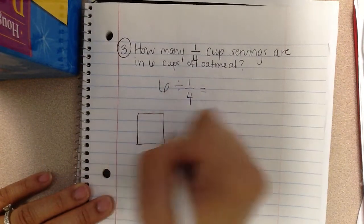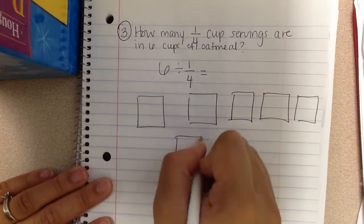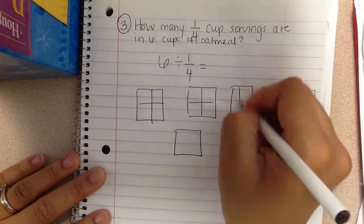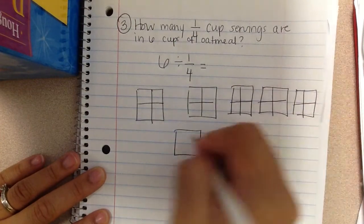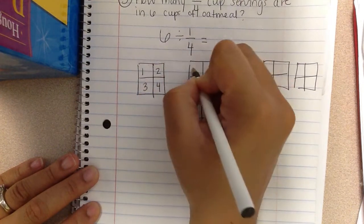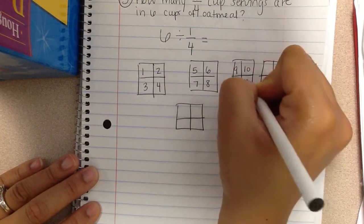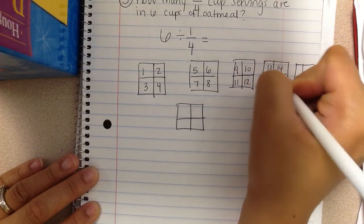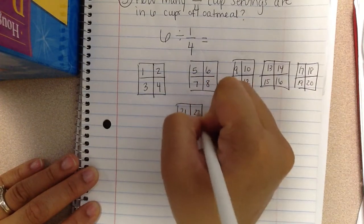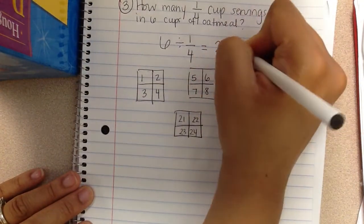I'm going to draw six boxes. And I'm going to split it into fourths. And I'm going to count how many fourths are there: 1, 2, 3, 4, 5, 6, 7, 8, 9, 10, 11, 12, 13, 14, 15, 16, 17, 18, 19, 20, 21, 22, 23, 24 of the little fourths are there. So there's 24 servings.